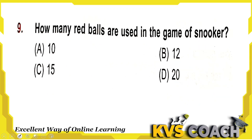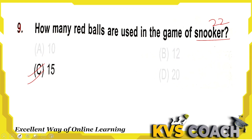Next question: how many red balls are used in the game of snooker? In snooker, totally we use 22 balls. There are 15 red balls and one cue ball. The rest 6 balls are of different colors: one yellow, one brown, one black, one green, one pink and one black. These are the 6 balls different from the 15 red balls, and one last ball is the cue ball. So the right answer is option C.